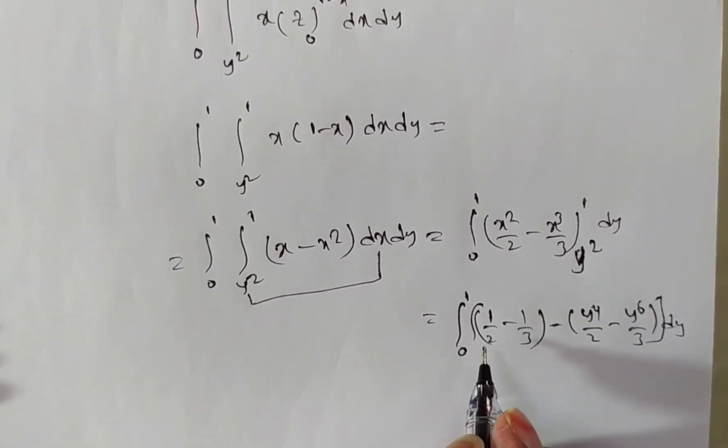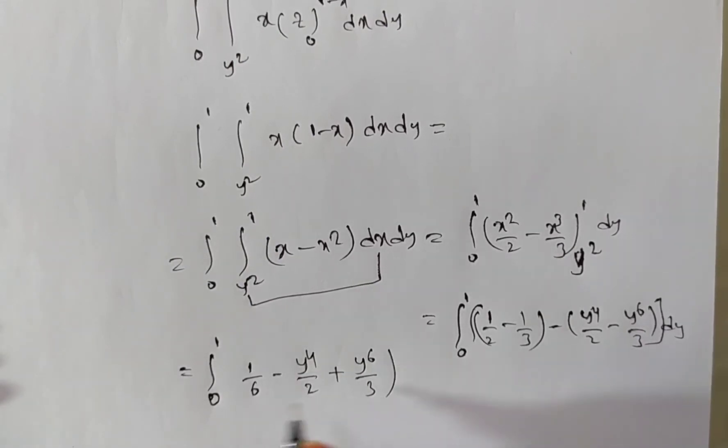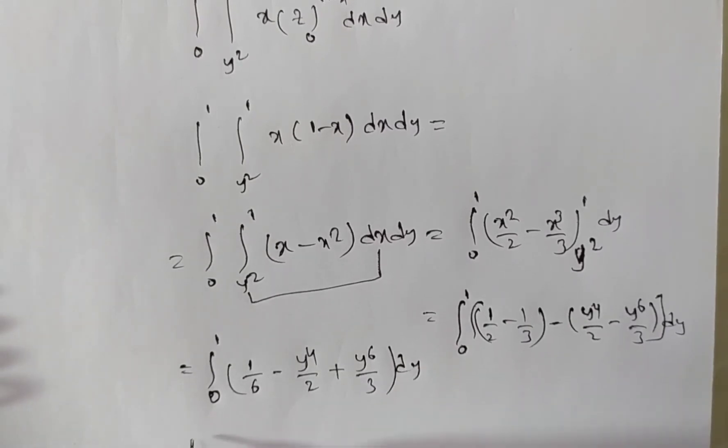Now, here again you have to integrate. I am simplifying this first, integral 0 to 1, 1 by 2 minus 1 by 3 is nothing but, lcm is 6, 3 minus 2 is nothing but 1 minus y power 4 by 2, minus half minus plus y power 6 by 3 into dy.